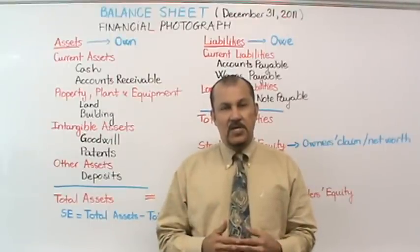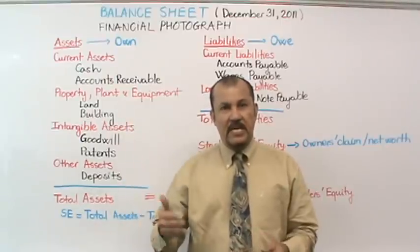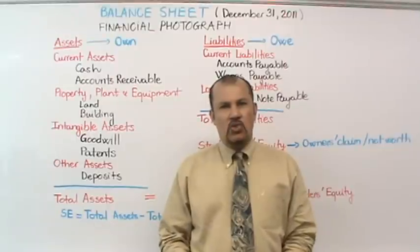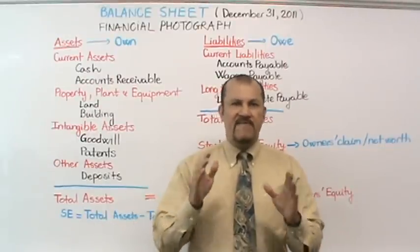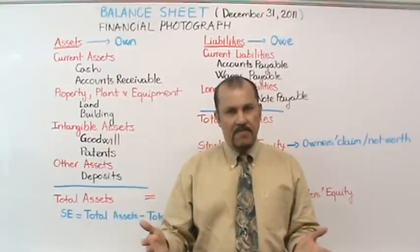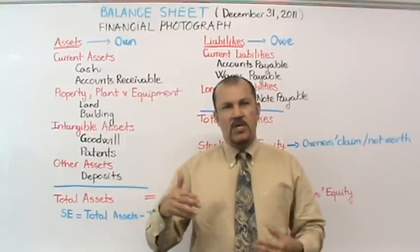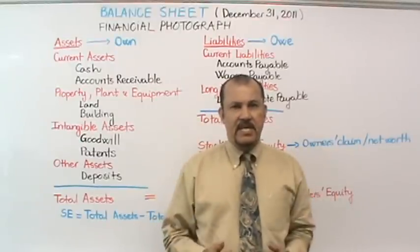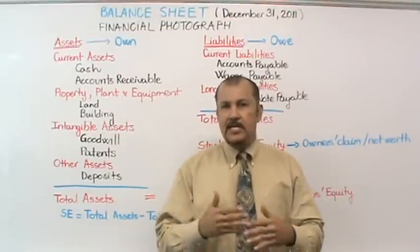An analogy I like to use is that of a financial photograph. A balance sheet is like a financial photograph. If you were all sitting in my classroom and I took a picture of you right now, the camera would record your postures at the moment the flash went off. But one millisecond after I took the picture, all of your postures could conceivably change. Similarly, the balance sheet records the financial position of a company as of a certain date — it could be as of December 31st, 2012, or as of April 30th, 2013, etc.